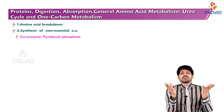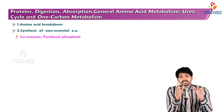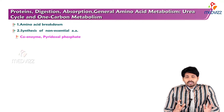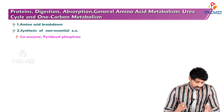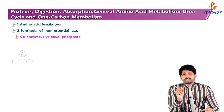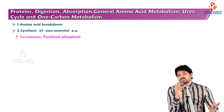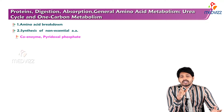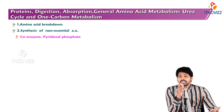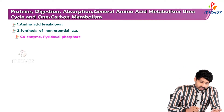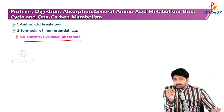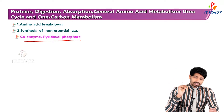The main points of transamination are amino acid breakdown and the synthesis of non-essential amino acids. For example, alanine is a non-essential amino acid synthesized in the body through transamination reactions. The main coenzyme is pyridoxal phosphate, a B6 water-soluble vitamin, which plays a major role in transamination reactions.